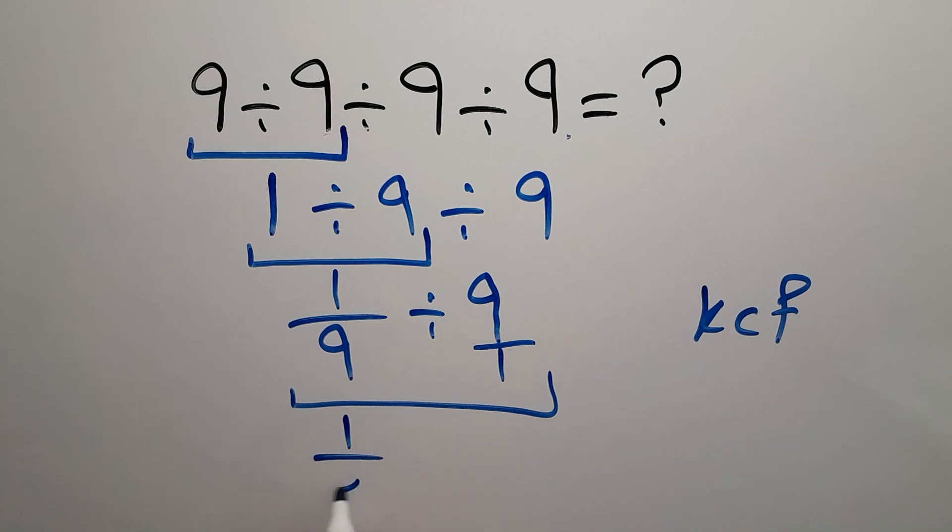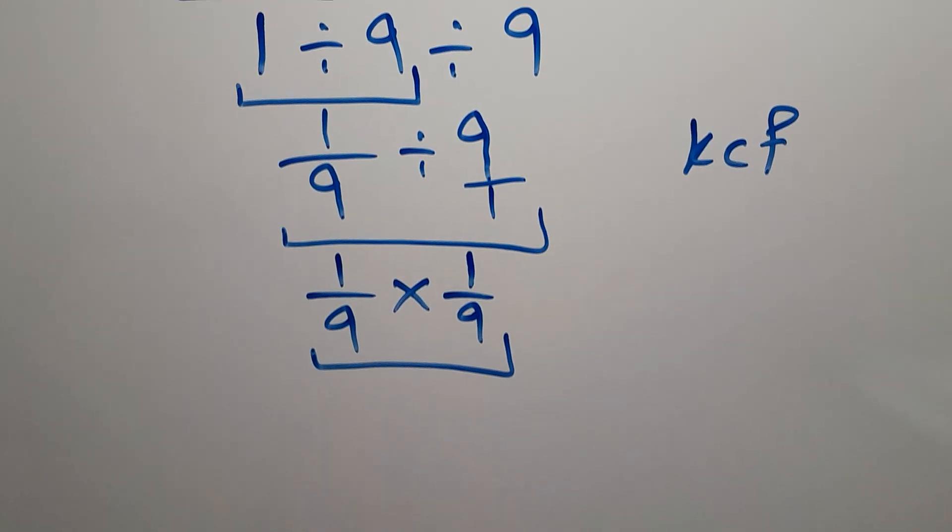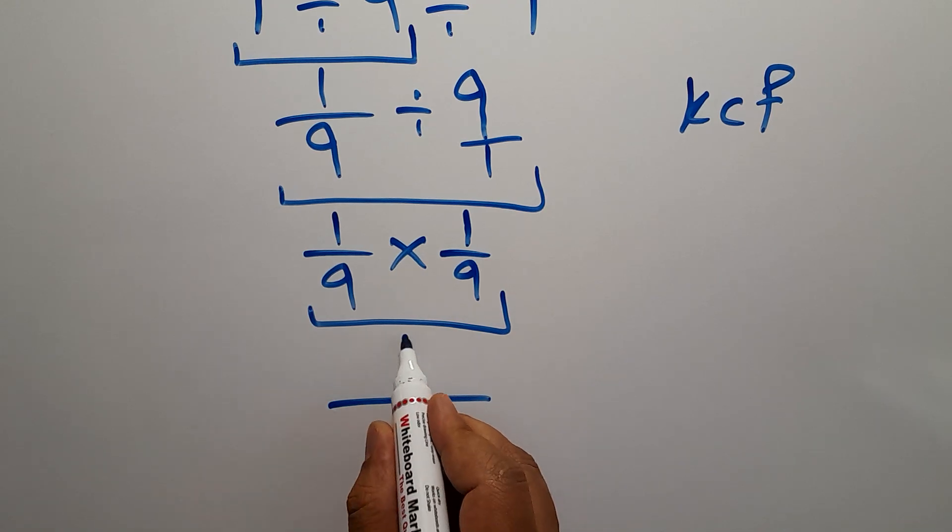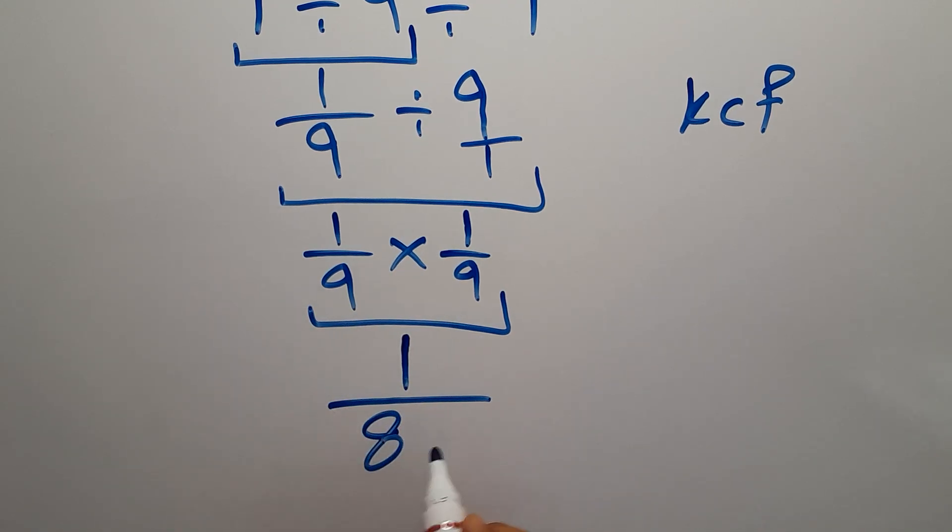And this is equal to, 1 times 1 gives us 1, so 1 over 9 times 9 which equals 81. So therefore our final answer to this problem is just 1 over 81.